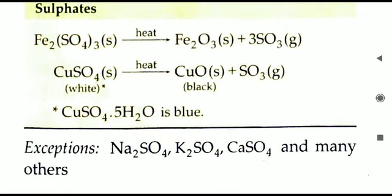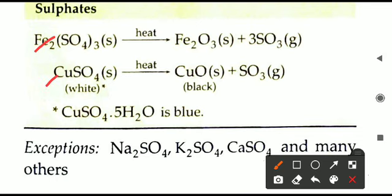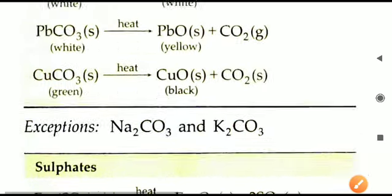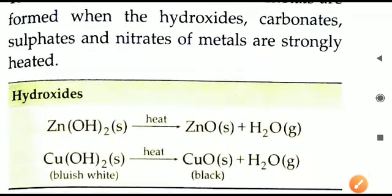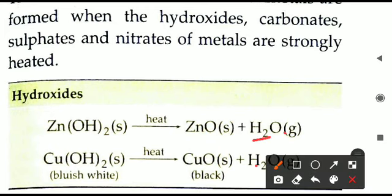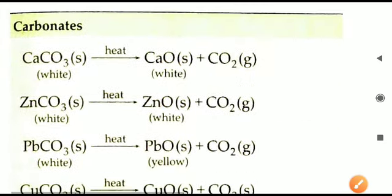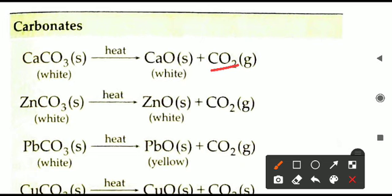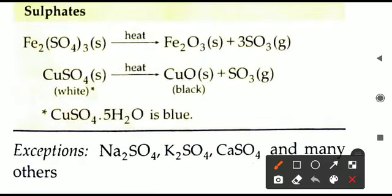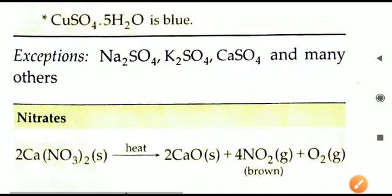For sulfates: ferrous sulfate and copper sulfate produce their respective oxides on heating, along with SO3 — sulfur trioxide gas. So remember: if hydroxide is heated, water is produced along with the oxide; if carbonate is heated, CO2 is produced; if sulfate is heated, SO3 gas is produced. All these are gases produced alongside the oxide.